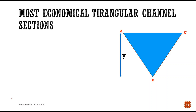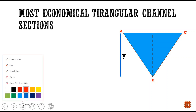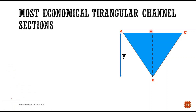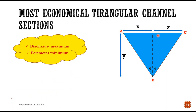Here is a triangular channel section with a depth of y. I am drawing a perpendicular from the bottommost portion of the channel to the midpoint of the top width. The angle made by the sloping side to the vertical is named as theta, and the top width is 2x — that is x from A to the vertical and then to C.